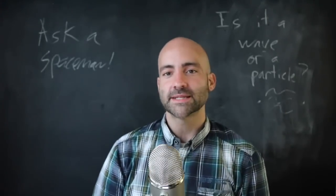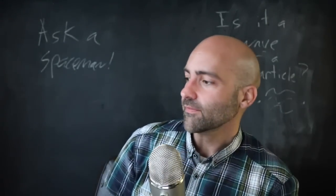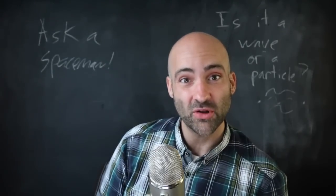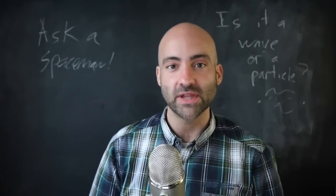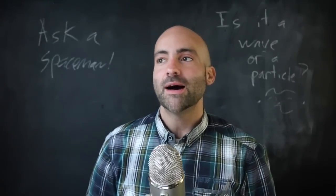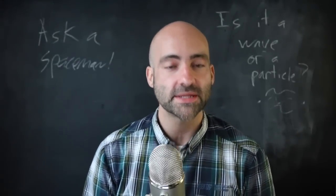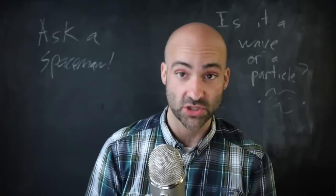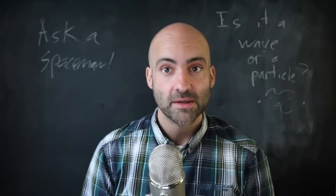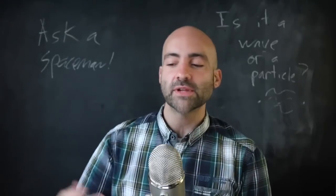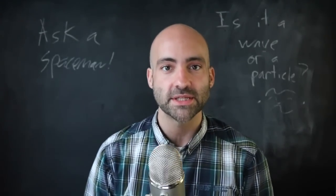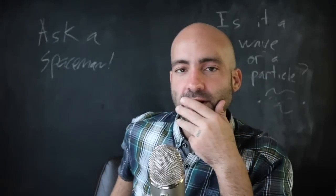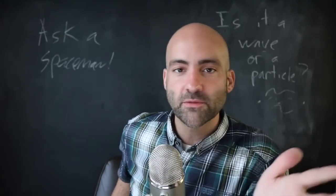So then we invented quantum mechanics. Another episode. And we came up with the math to describe all this. The behavior of electrons going through. Putting into words is hard. These are the various interpretations of quantum mechanics. Like, how do we actually describe this stuff? And I'm going to give you like the default explanation, the Copenhagen interpretation. This is the most commonly accepted interpretation of quantum mechanics.